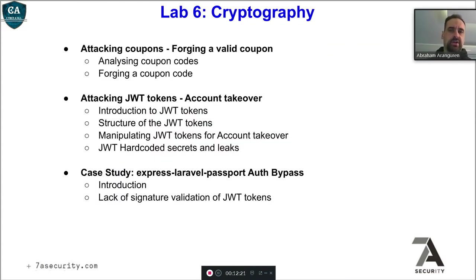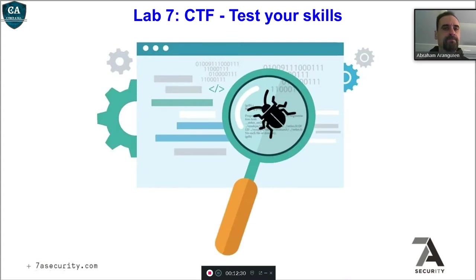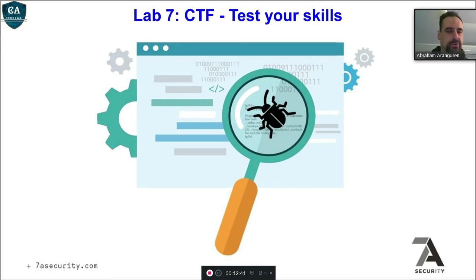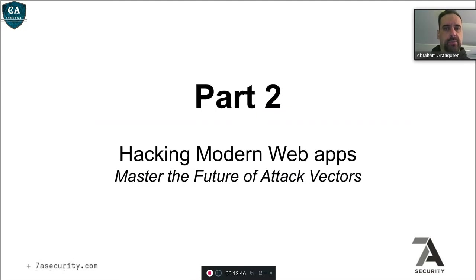In lab 6, cryptography — we talk about attacking coupons, attacking JWT tokens, and Express and Laravel passport authentication bypass. The first day finishes with a CTF: some open challenges for you to really test all your skills after you complete all the other labs — not spoon-feeding, but meant for you to try harder.